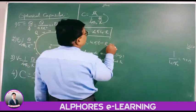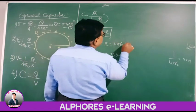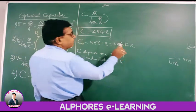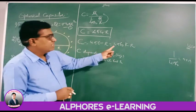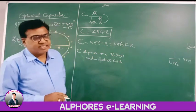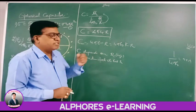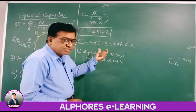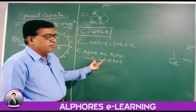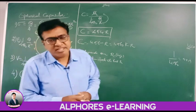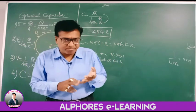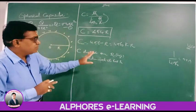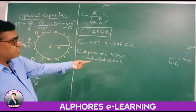In a medium with dielectric constant K, it would be C = 4πε₀KR = KR/9 nanofarads. The capacity of a spherical capacitor depends upon the size of the capacitor and the medium in which it is present. Since it is a sphere, the shape is fixed, so it depends on its radius and the dielectric constant.